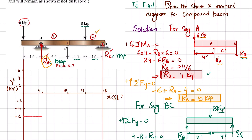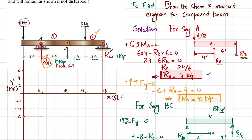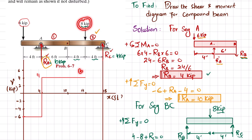From the 6 kip load to point A there is no additional load, so shear remains at −6. At point A there is a reaction RA = 10 kips, so −6 + 10 = +4. The shear force jumps to +4. From point A to the next load there is no shear change, so it remains horizontal at +4.